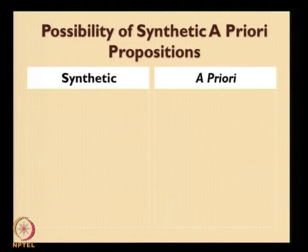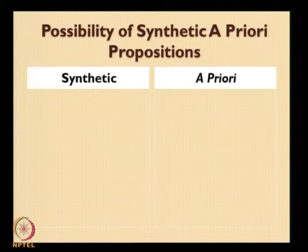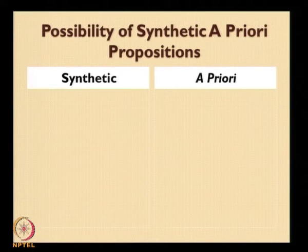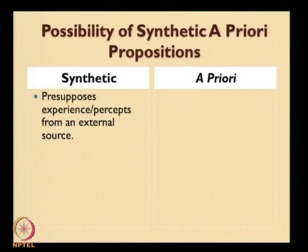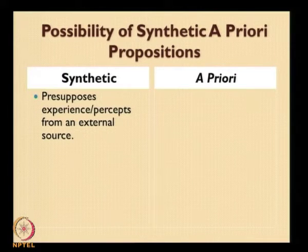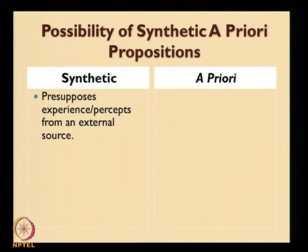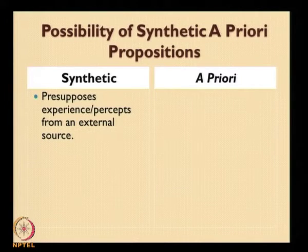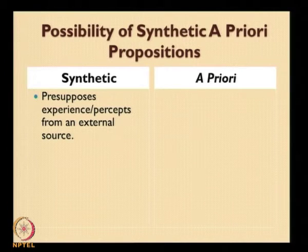We will start from where we stopped in the previous lecture: the possibility of synthetic a priori propositions, which is the central problem in Kant's Critique of Pure Reason. What we saw previously was that synthetic a priori propositions on the one hand talk about the world, and on the other hand they also talk about us. These two aspects of internal and external space — the outer and inner — are brought together to explain the process of knowledge acquisition by Kant.